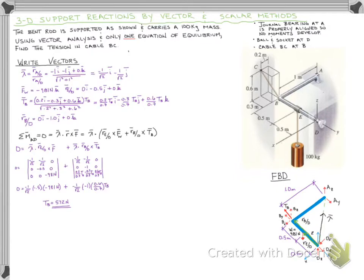By taking moments about a carefully chosen axis, we found the reaction in one equation. The key insight was drawing a line connecting two support reactions so all their components acted through that axis, eliminating them from the moment equation. This left only one unknown — the cable tension. Check out the next video for the scalar solution to this problem.